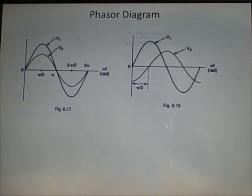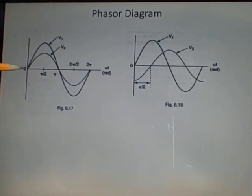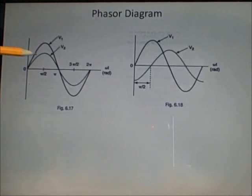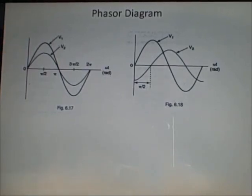Now, let's consider diagram one. On the left-hand side of the screen, consider the two AC voltages v1 and v2. You can see that they both pass through zero going positive and reach their positive peaks at the same time. They also return to zero and reach both negative peaks at the same time. These two voltages v1 and v2 are said to be synchronized, or more particularly, in phase with one another.